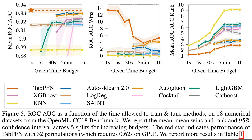After seeing the kinds of data in figure three, figure five shows us the payoff. It plots the actual performance, measured by ROC-AUC, against the time budget allowed for different methods. The really striking thing is Tab PFN — that orange line — hits a very high accuracy level almost instantly, within a second. Compare that to others like AutoGluon or AutoSklearn, which need way more time — like minutes or even an hour — to reach similar performance levels. The other plots show Tab PFN winning often and ranking well, especially with very little time.